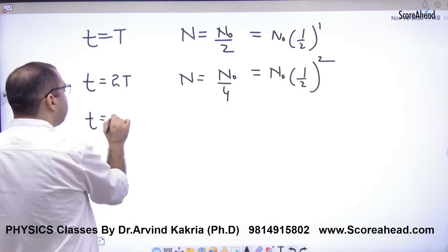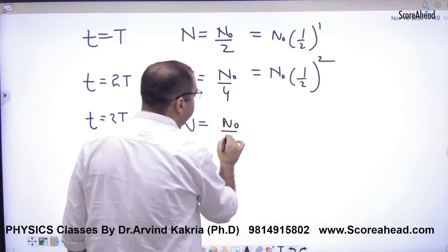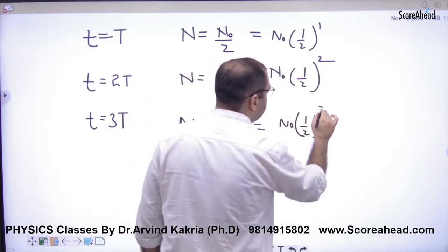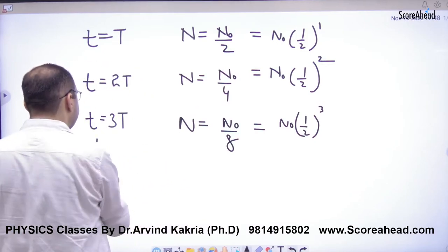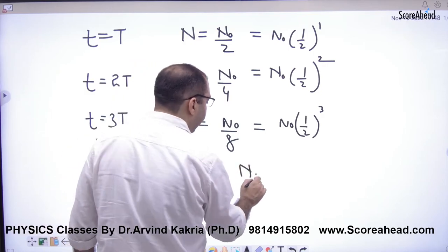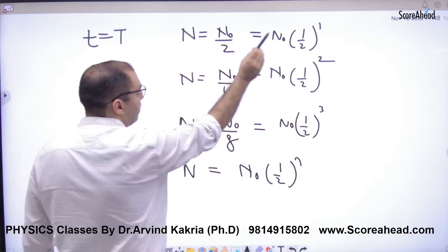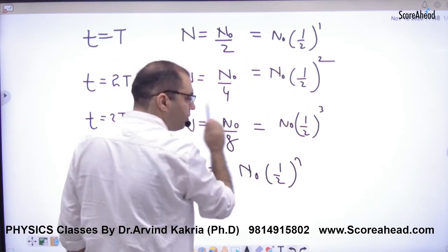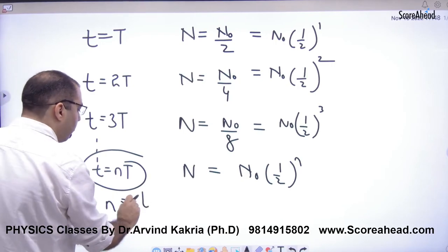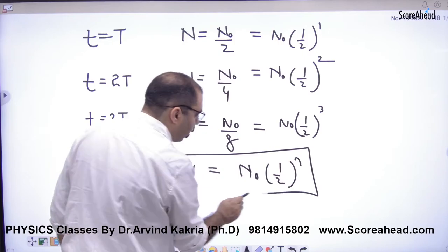When 3 half-lives, number of atoms will be N0 by 8, so N0 half raised to power 3. And if the half-life is nth, then you will have N0 half raised to power n. First half-life period 1, second 2, third 3, n. So small n value is small t by capital T. So this formula you note, it is very important.